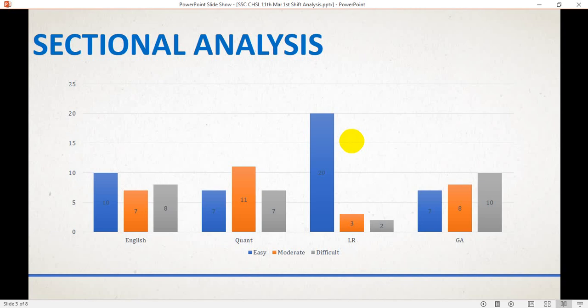For GA: 7, 8, and 10. Most easiest section to attempt first is logical reasoning, so you should focus on the logical reasoning section. For English it was quite okay – 10 were easy questions, 7 were moderate. The ones you need to focus on are general awareness and quant. Quant was a calculative section and general awareness questions were difficult to attempt.